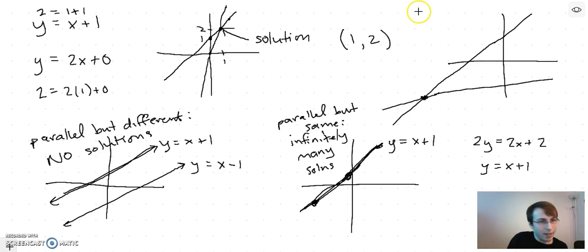And then otherwise, they're just intersecting in one point because they're non-parallel lines. Then it's one solution.